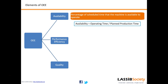Let me give you an example. Suppose you have a shift planned for eight hours. Out of these eight hours there were certain stoppages that prevented you from running the machine, so you were able to run it for only six hours. Six divided by eight equals three-fourths — expressed as a percentage that is 75%. So we say our machine is available 75% of the time.